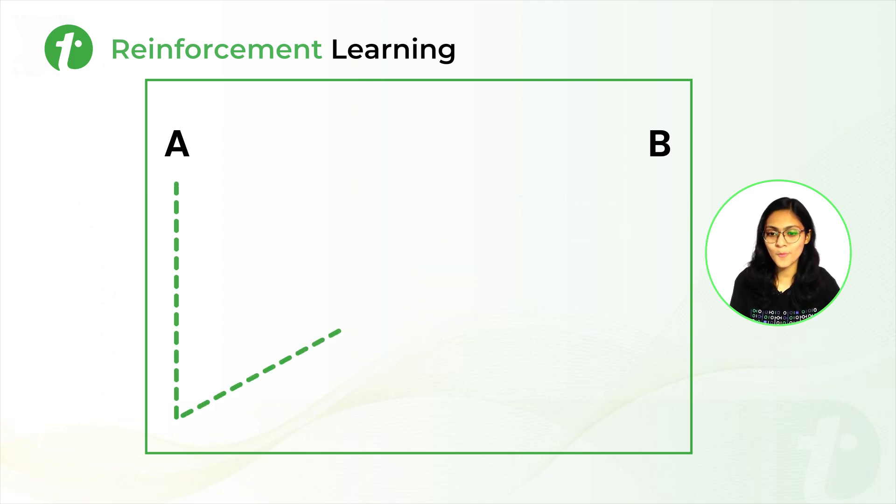So now let's say for path 1, it received plus 60 points and for path 2, it received plus 80 points. So from this, our agent will understand by itself that path 2 is more optimal than path 1. So this is how the reinforcement learning algorithm works.